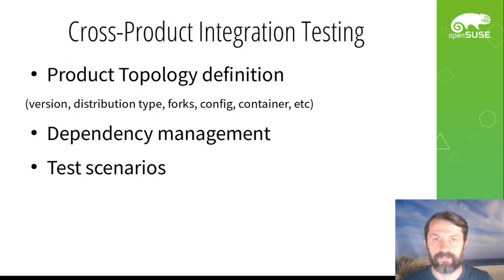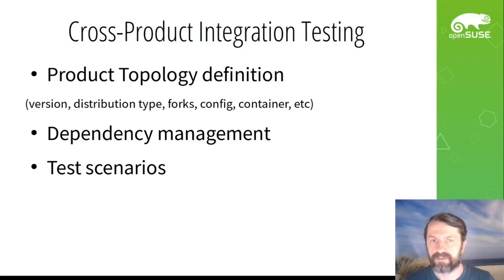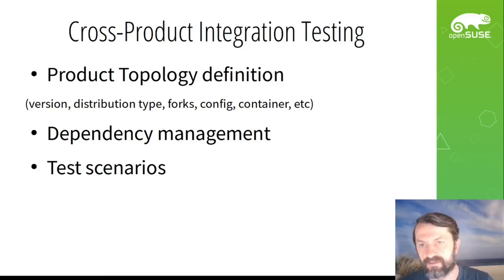So what does cross-product mean here? It means there are several products, each with maybe its own life cycle, its own teams, its own quality control. We assume each has good quality, but it's hard to prove that several products can communicate together, or at least it's hard to create these scenarios. Usually there is no expert who can cover all involved products at the same level. We are lacking a tool to define how we script complex cross-product communication scenarios.